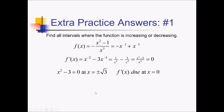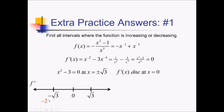Let me set up an f prime number line here. I've got critical values at negative radical 3, 0, and positive radical 3. Let me test something in each of these intervals. To the far left, I'm going to try out negative 2 — that's a little bit less than negative radical 3, since negative radical 8 equals negative 2. I'm going to use the fraction version of the derivative here because my denominator x to the fourth, since that's an even power, is always going to be positive.